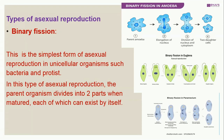The first type is binary fission. The word 'binary' means two, and 'fission' means to break — so it simply means the breaking of an organism into two. This is the simplest form of asexual reproduction and it occurs in unicellular organisms such as bacteria and protists. Examples of protists are amoeba, euglena, paramecium, chlamydomonas, and so on. The parent organism divides into two parts when fully matured, and each individual can exist by itself.